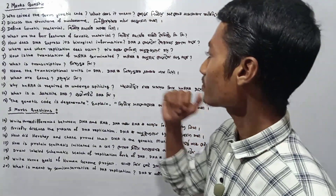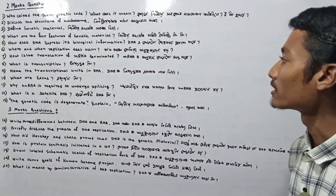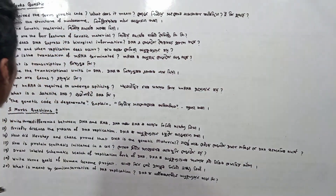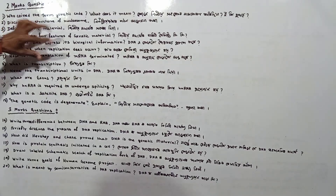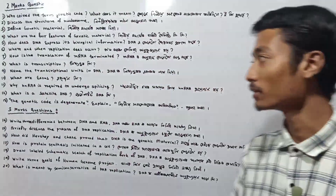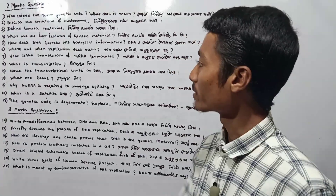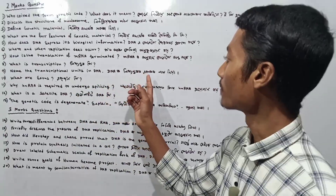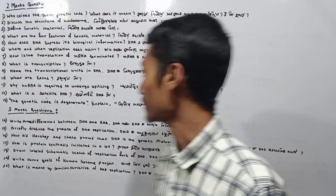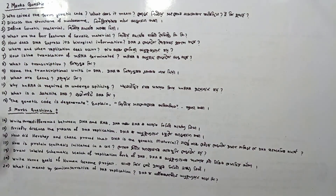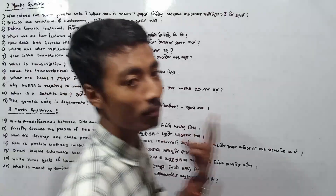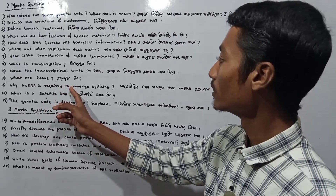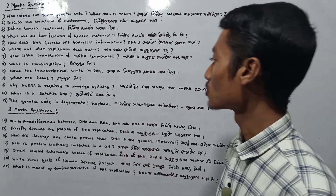The next question: how is the translation of mRNA transmitted? What kind of replication is it? The next question: what is transcription — the writing of DNA? The next question: name the transcriptional units in DNA. The next question: what is existence? Why is RNA required to undergo splicing?